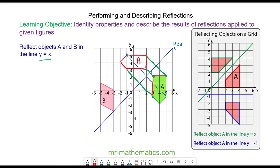Do you want to try and reflect object B in the mirror line y is equal to x? Pause the video and resume when you're ready. The point at negative 3, negative 3 is invariant — this is a key word for this lesson. Invariant means it is reflected or transformed onto itself, so the point will remain at negative 3, negative 3. The point at negative 3 and 0 is one and a half units away, so it is reflected one and a half units away on the other side. Again, a vertical line becomes horizontal.